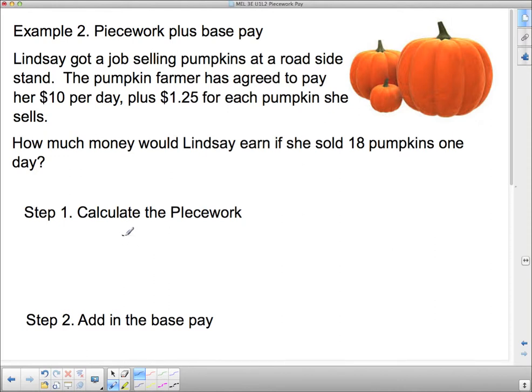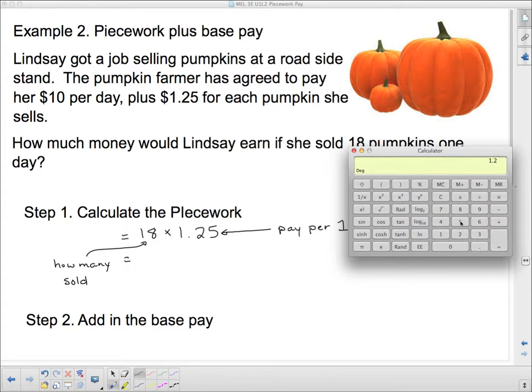Step 1: Calculate the piecework. She sells 18 pumpkins. Each pumpkin is worth $1.25 for her when she sells them. We need to figure out what 18 times $1.25 is. For piecework, this first number is how many sold, and this is the pay per one, or unit pay. So 18 times $1.25 equals $22.50.